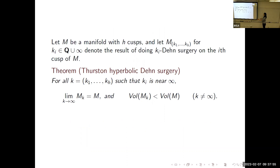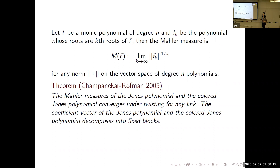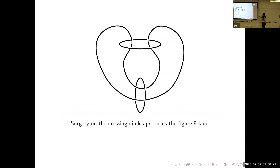So there's a convergence of volume, and the question Abhijit and Ilya were considering is: in view of the volume conjecture, what converges for the Jones polynomial and the colored Jones polynomial? It turns out the thing they considered is the Mahler measure, and it does converge. It's kind of related to volume, but not exactly the volume.